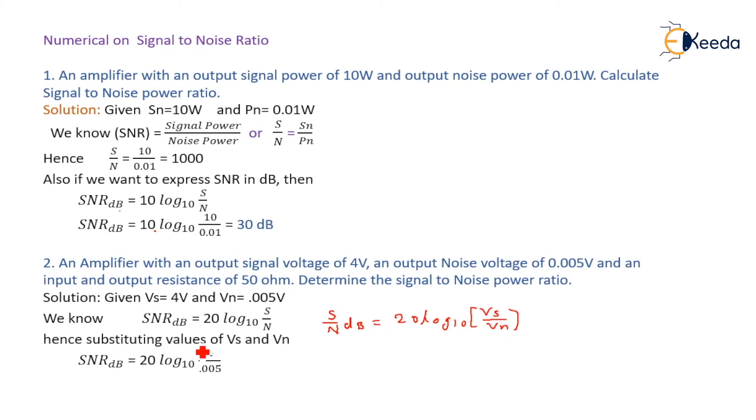Hence, substituting values of Vs and Vn, SNR in dB equal to 20 log to the base 10 of 4 divided by 0.005. Finally, you will get the SNR in dB equal to 58.06 dB.